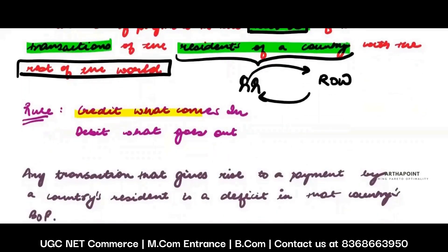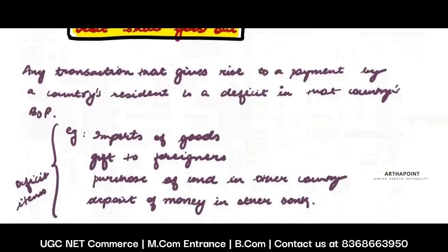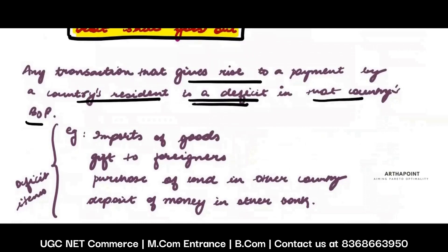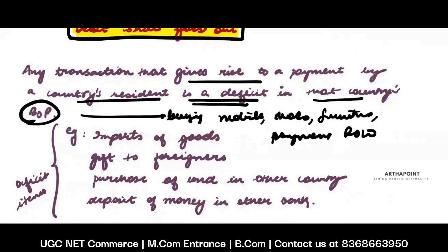Whenever money will come in, it will be a credit, and whenever it will go out, it will be a debit. Credit is what is going to come in and debit is what is going to go out. Any transaction that gives rise to a payment by a country's resident is a deficit in that country's BOP. For example, if your country's residents are buying something from the rest of the world — maybe a mobile, shoes, furniture — whenever payment or money is going out from the residents to the rest of the world, it is considered as a deficit in the BOP.